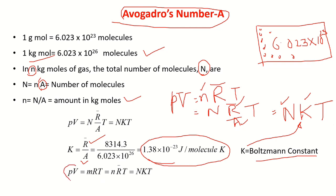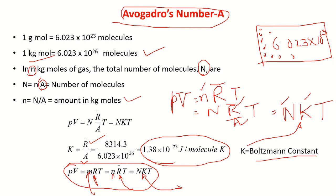We can write PV = mRT, nR̄T = NkT. The difference is: R is the specific gas constant, R̄ is the universal gas constant, and k is Boltzmann's constant. Here m is the mass of the substance, n is the number of moles, and N is the number of molecules. Please remember those distinctions.